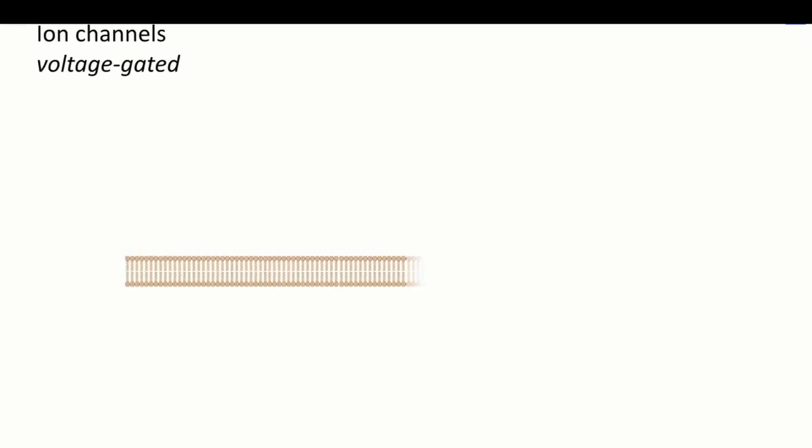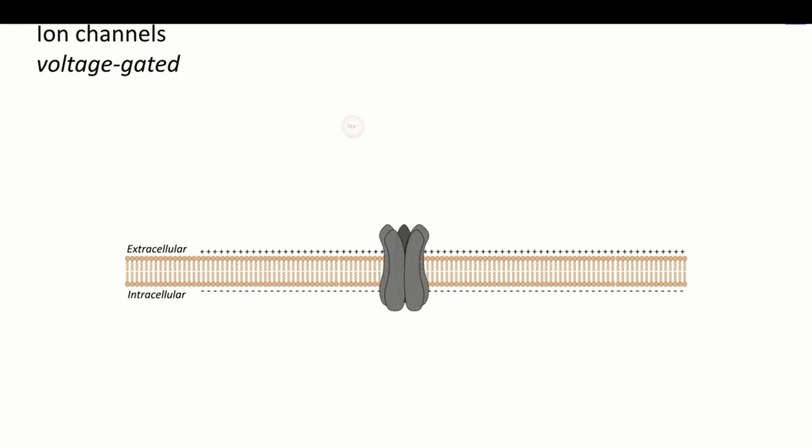We have previously looked at ion channels that are directly activated by ligands binding to a receptor on the channel protein. These are often called ligand-gated ion channels. This distinguishes them from many other ion channels close to the channel protein. These are known as voltage-gated ion channels.